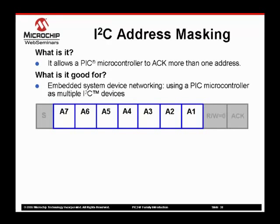Address masking allows a single I2C module to monitor more than one address on the bus, allowing one device to respond with multiple pieces of information. For example, in one system, one I2C device may act as a temperature sensor, a second monitors the system voltage, and a third acts as the real-time clock. In the second phase of the system design, one device — our PIC24F for example — could act as a source for all three pieces of data.